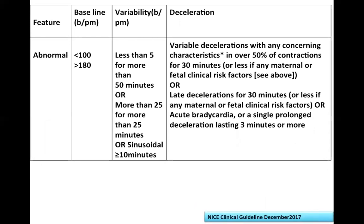Abnormal features include: baseline below 100 (bradycardia) or above 180 (tachycardia), variability below 5 for more than 50 minutes, variability above 25 for more than 25 minutes, or sinusoidal fetal heart rate pattern for more than 10 minutes. Also: variable deceleration with concern characteristics over 50% of contractions for 30 minutes or less with any maternal or fetal clinical risk factor, late deceleration for 30 minutes or less with clinical risk factors, or acute bradycardia or single prolonged deceleration lasting more than 3 minutes.